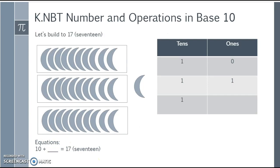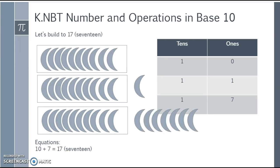Let's build to 17. We knew how to build to 11 and 12. So a group of 10 plus how many will give us 17? What we can do is add 7 individual ones. A group of 10 plus 7 ones gives us 17. So 10 plus 7 equals 17.